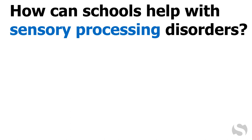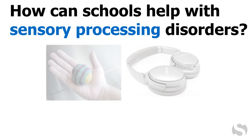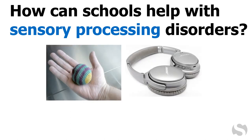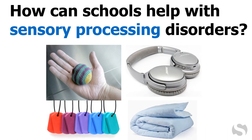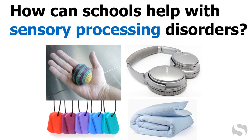Educators can make tools available to support students with sensory processing disorders, such as fidget objects, earphones, calming music or nature sounds, objects appropriate for chewing, material to help with visual discrimination like highlighting strips or colored overlays, detailed schedules and timers, and weighted blankets.